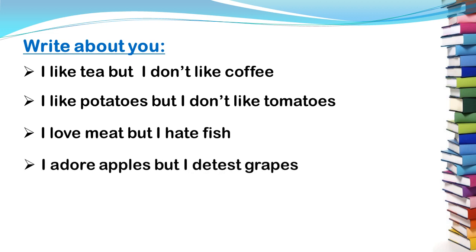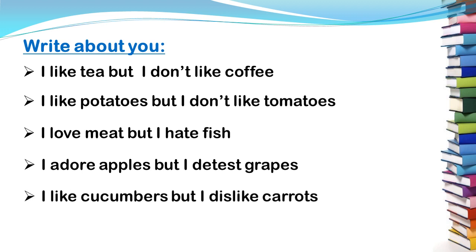Sentence number four: I adore apples but I detest grapes. The last sentence: I like cucumbers but I dislike carrots. These are just examples — you can choose other food that you like or don't like; it's up to you. Please write subject plus verb plus object. You can link between sentences with contrasting words like but or however, and you can also add ideas with and or then.